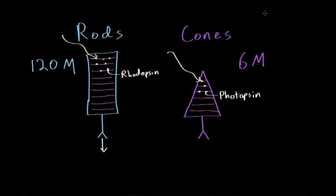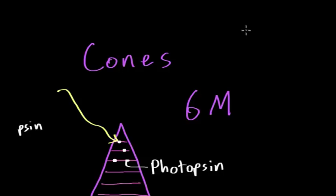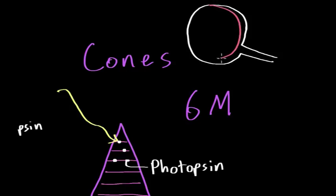Another big difference between rods and cones is where they are located in the eyeball. So if I draw a very simplified diagram of an eyeball, and this is the optic nerve exiting the back of the eye. So this would be the front of the eyeball, this is the back of the eyeball. And as I mentioned in a previous video, the back of the eyeball is coated by a membrane known as the retina. So rods are actually found in the periphery of the eyeball.